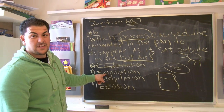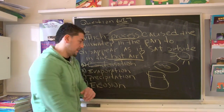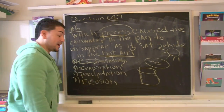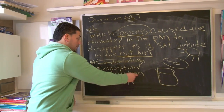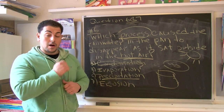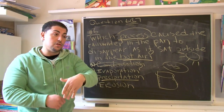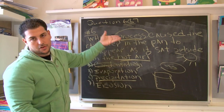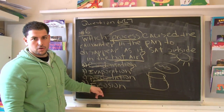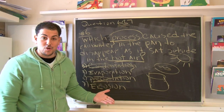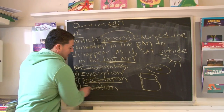There's our favorite word: evaporation. We know that might be the right answer, but let's check the other answers. Precipitation — if you remember from our other questions, precipitation is when it rains, it sleets, it snows, it hails. That's not what we're talking about, so that's out. And there's that ugly word: erosion. We're not talking about the ground opening up or anything like that, so that's out too.